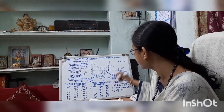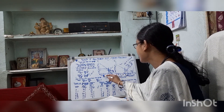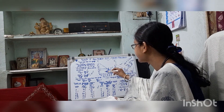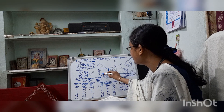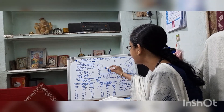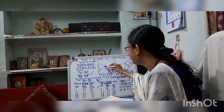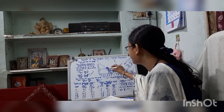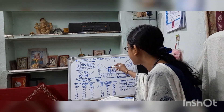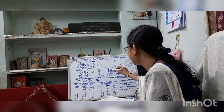Consumer's equilibrium is graphically shown in this diagram. The OX axis represents the quantity of X, and the OY axis represents MUX divided by the price of X. If the consumer consumes 1 unit of X, MUX/PX is 10. For 2 units, it is 9. For 3 units, it is 8. For 4 units, it is 7. For 5 units, it is 6. For 6 units of X, MUX/PX is 5.